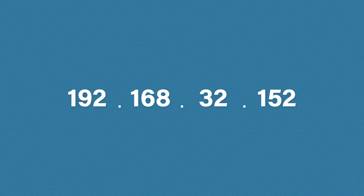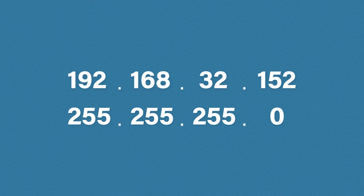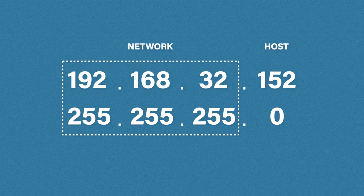Now the address itself is separated into two parts. The first part represents the network and the second part represents the host. To know which part of the IP address represents the network, we used to rely on the first few binary bits. But since the early 90s, we have something called a subnet mask. A subnet mask is always paired with an IP address and is used to identify the network section and the host section of the address. In its simplest form, whenever you see 255, this is the network part of the address. Whenever you see a 0, this is the host part of the address. It can get a bit more complicated than that, but we'll look at that later on.